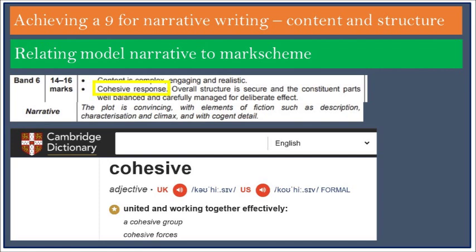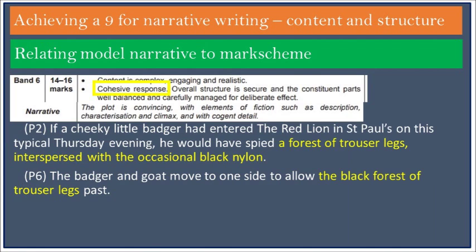The response needs to be cohesive — cohesive meaning united and working together effectively. What makes this narrative cohesive? Well, a number of factors. Firstly, we have the common thread of the badger and goat running throughout. They feature in paragraphs 2, 4, 5, and 6, and are silent witnesses to the woman's developing discomfort. However, I also repeat imagery, which helps bind the narrative together. 'A forest of trouser legs interspersed with the occasional black nylon' in paragraph 2 becomes simply 'a black forest of trouser legs' in paragraph 6.